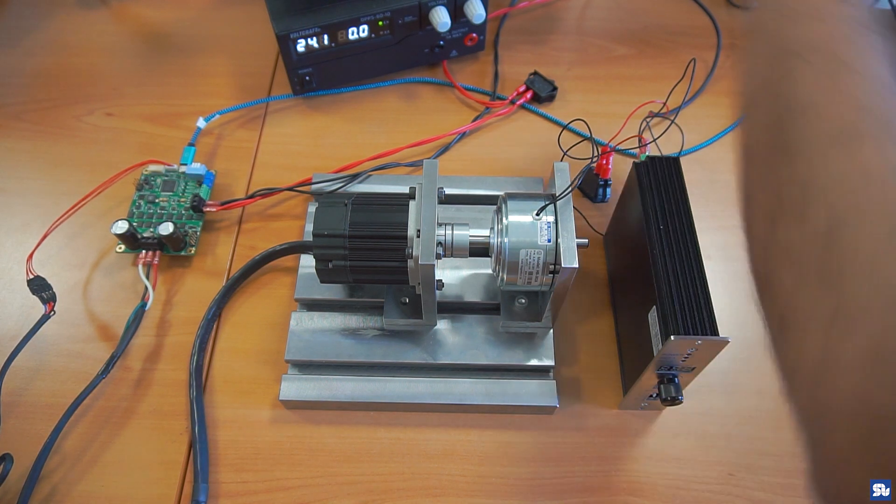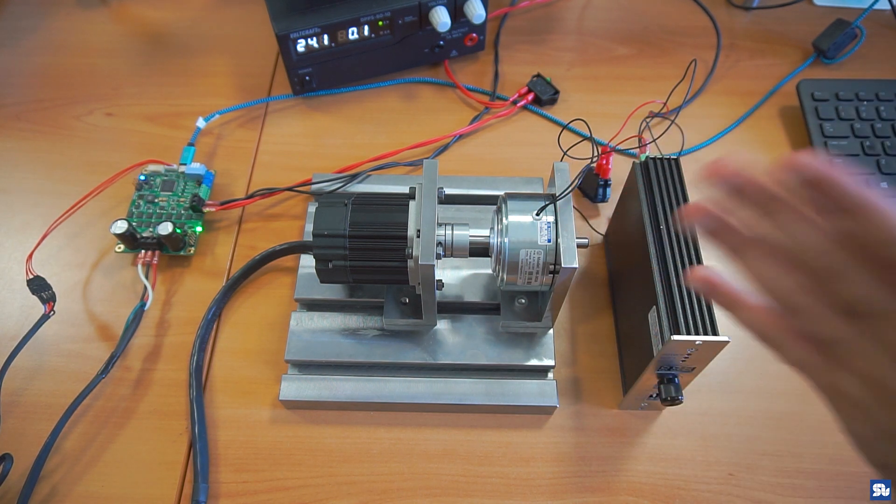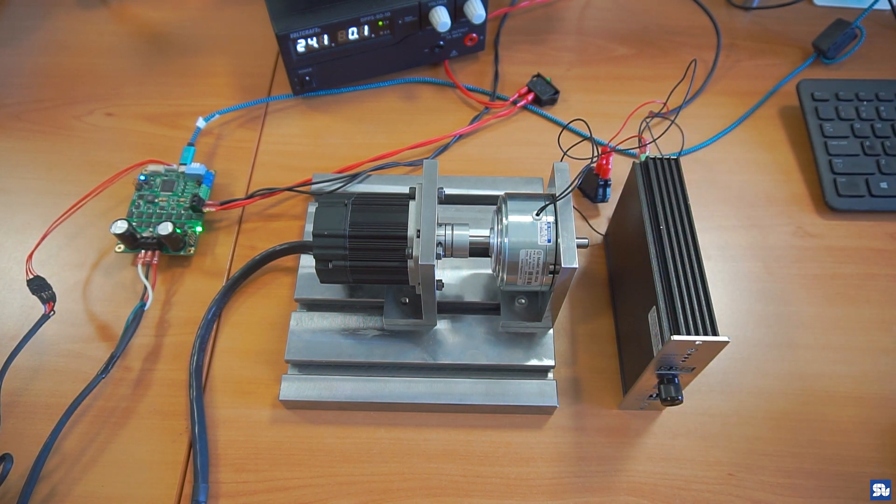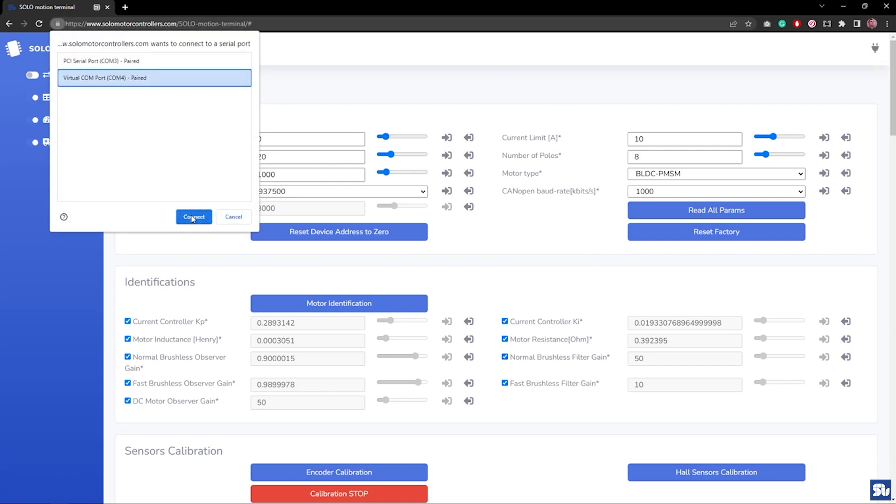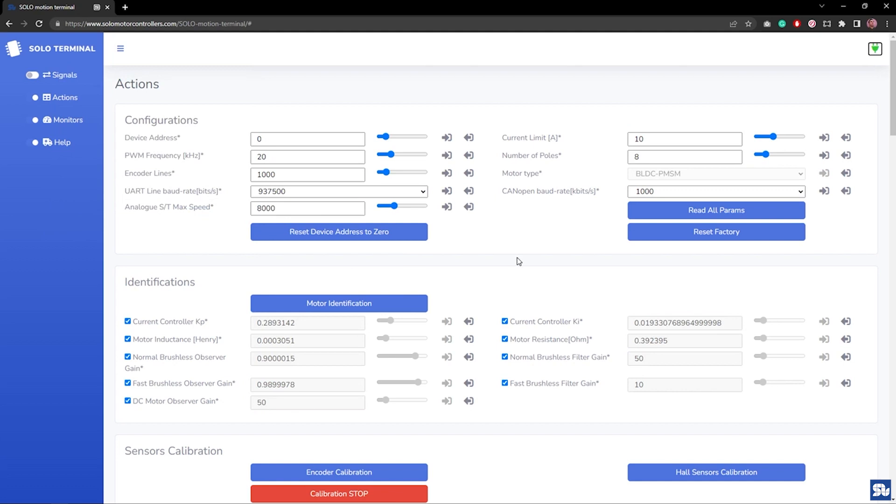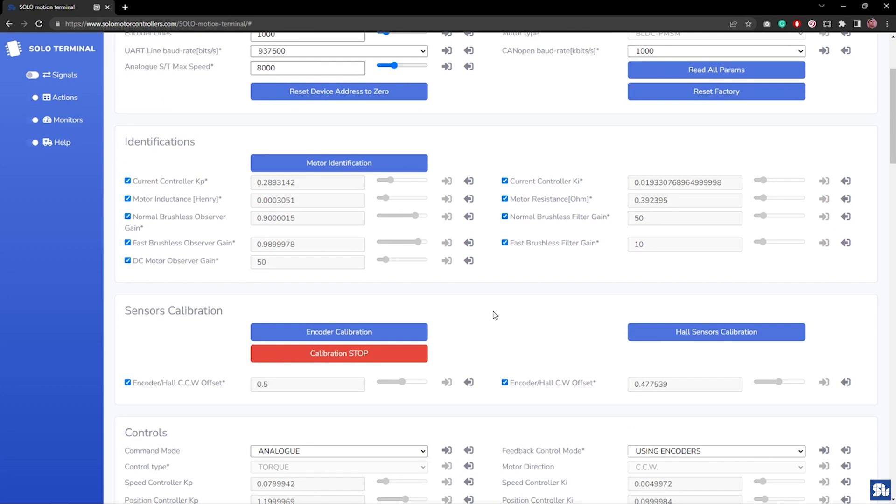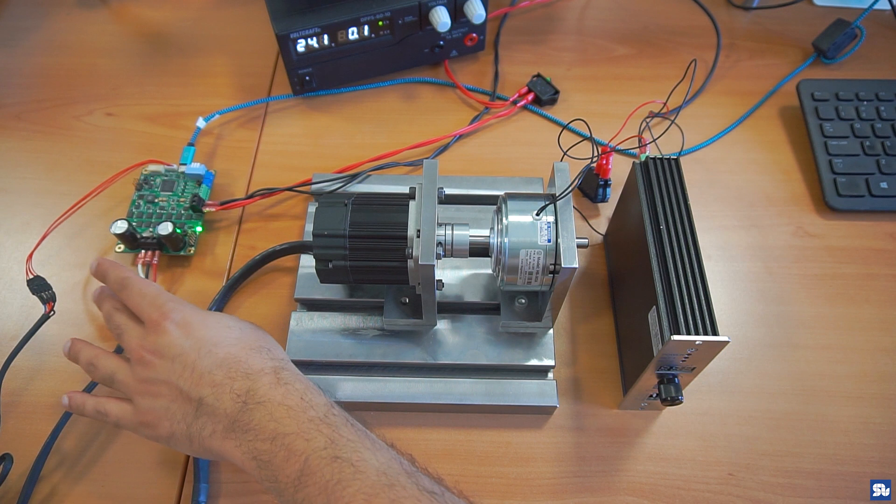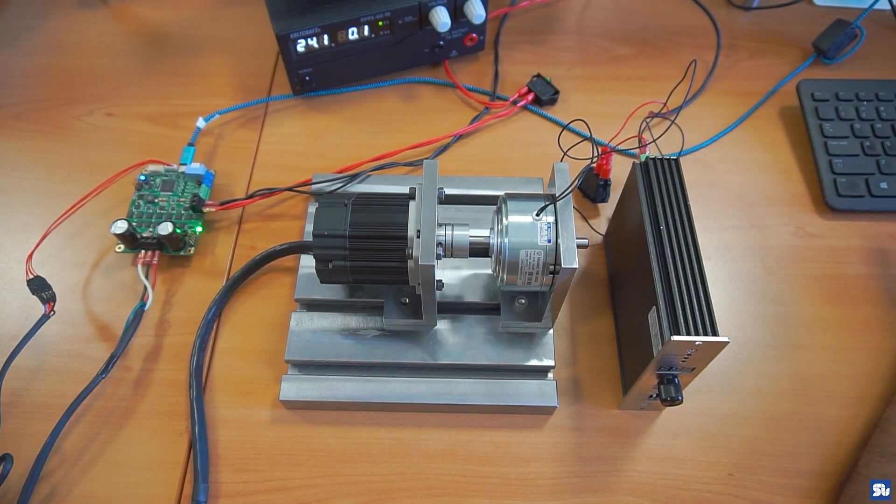The first thing I'm going to do is turn on Solo. Solo is blinking; the E2 LED is blinking, which means everything is good. I go into Motion Terminal and get connected to Solo through the USB cable. After connection, I see all the parameters currently on the non-volatile memory of Solo. I've already done the tuning of the motor, the encoder calibration, and the connection of the motor wiring. Everything is ready for me; I just go right away to the concept of torque controlling.